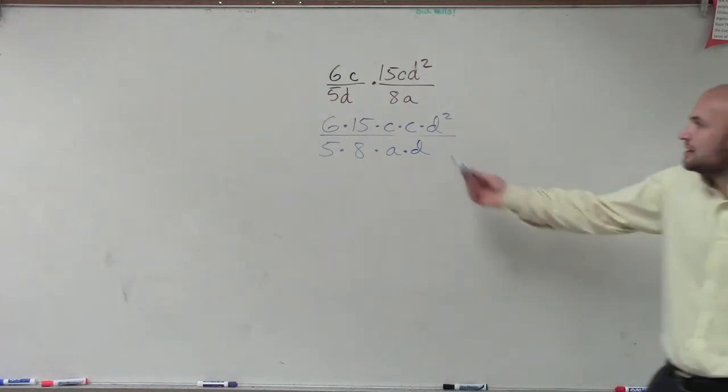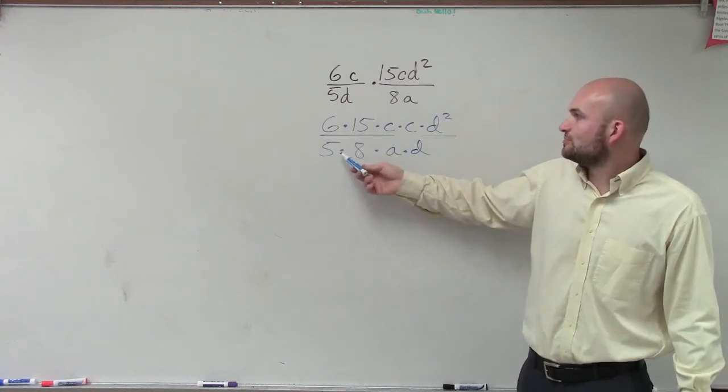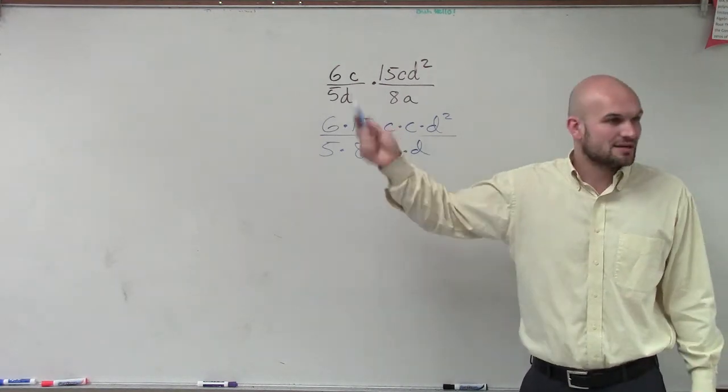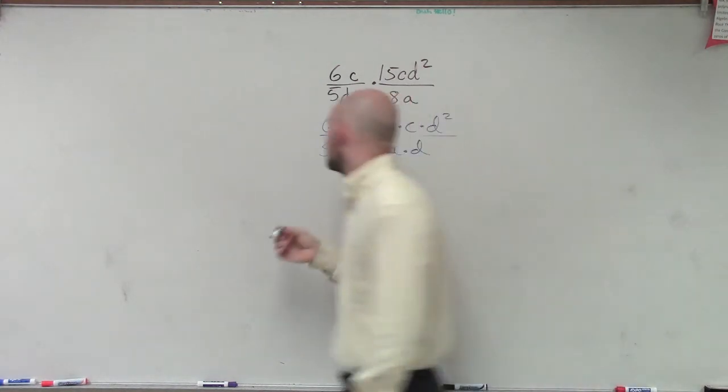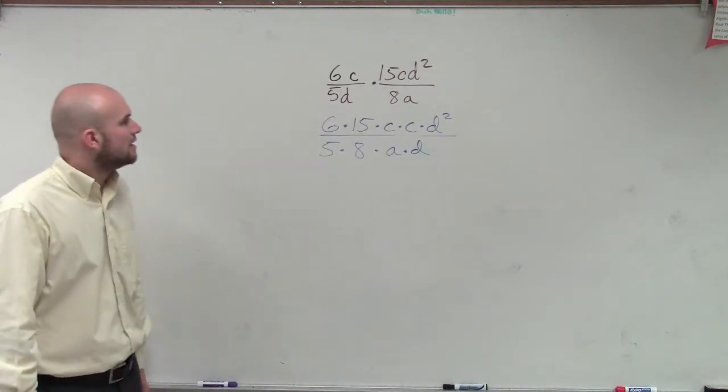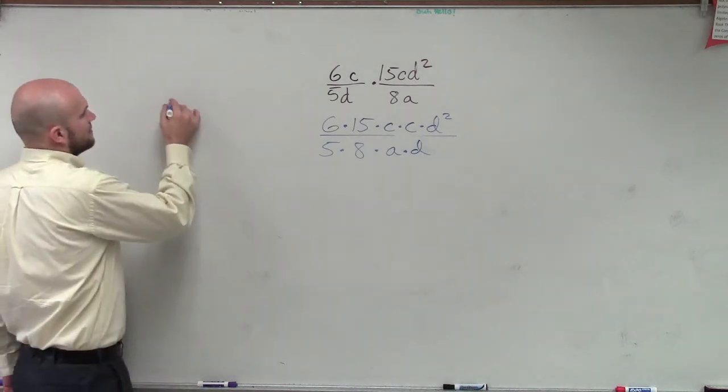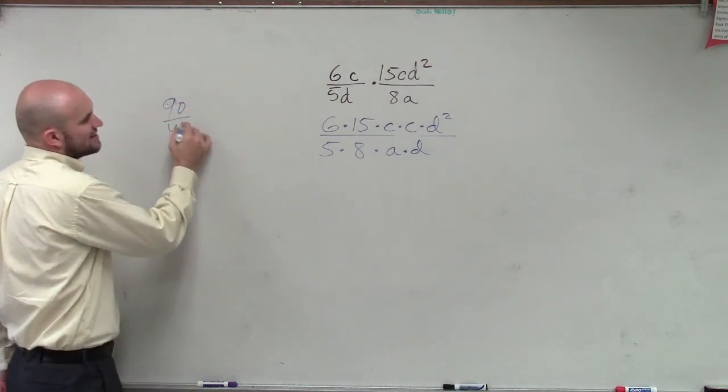And why this is important, because if you want to, you can multiply 6 times 15, and you can multiply 5 times 8, and then simplify it. 6 times 15 is going to be 90. So you could do 90 over 40, and then simplify that.